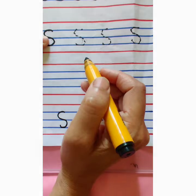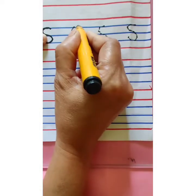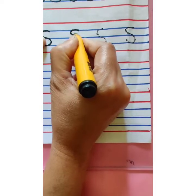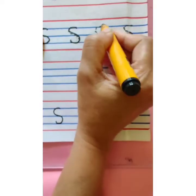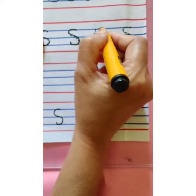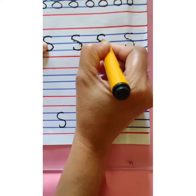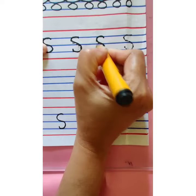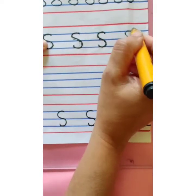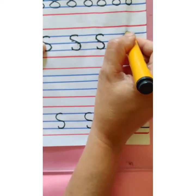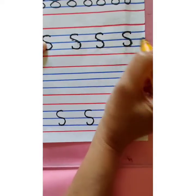The second pattern looks like S. Start with the first blue line, make an S like this. One more time: start with the first blue line, make an S like this. Within the three blue lines you are going to write S. Start with the first blue line, make an S like this.